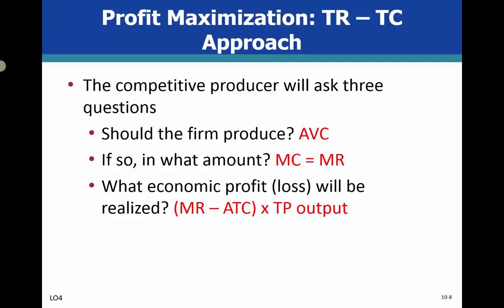A competitive producer asks three questions, and these questions apply across all four market models — whether we're in a monopoly, short run or long run pure competition, oligopoly, or monopolistic competition. Question number one: should the firm produce? We'll use average variable cost to answer that question, combined with what we know about marginal revenue equaling average revenue equaling price.